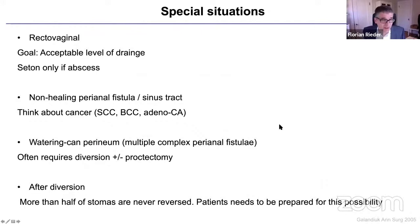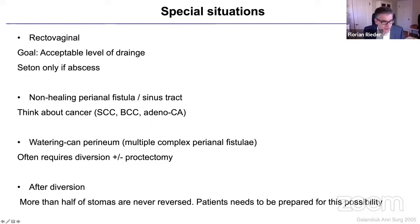Special situations: rectovaginal fistulas are clinically very tough. When drainage is reduced to acceptable levels, place a seton; drain any abscesses. Non-healing perianal fistulas should prompt consideration of malignancy, as cancer can develop in fistula tracts. Extreme cases — the 'watering can perineum' with multiple complex perianal fistulas — often require diversion and ultimately proctectomy. We must be honest with patients because once diverted, more than half are never reversed.